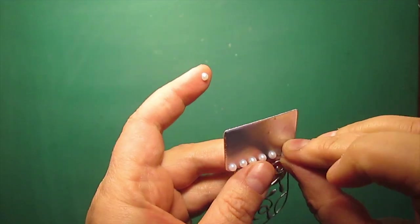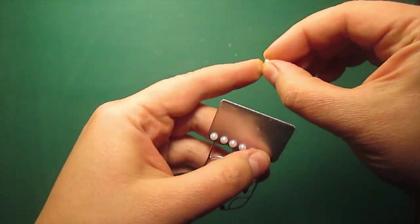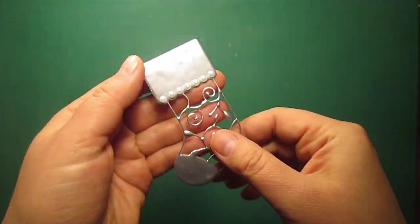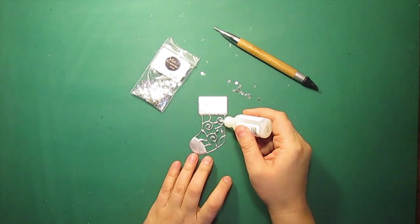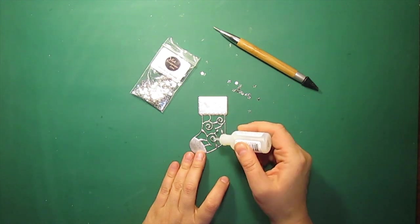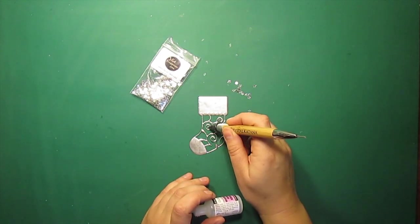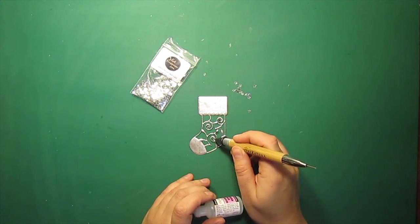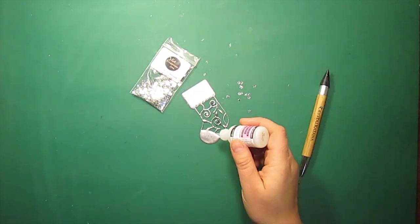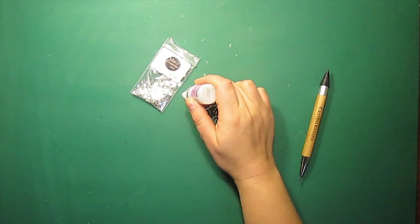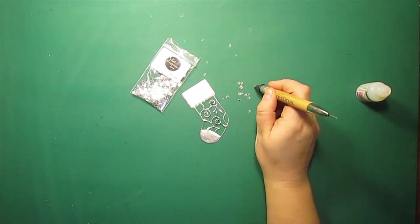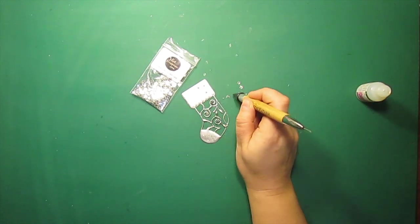I am now adding some self-adhesive pearls along the scalloped edge of the stocking. Then I will also add some silver star confetti to the end of each swirl as well as to the solid areas of the stocking. This will really make this image look like a finished little work of art.